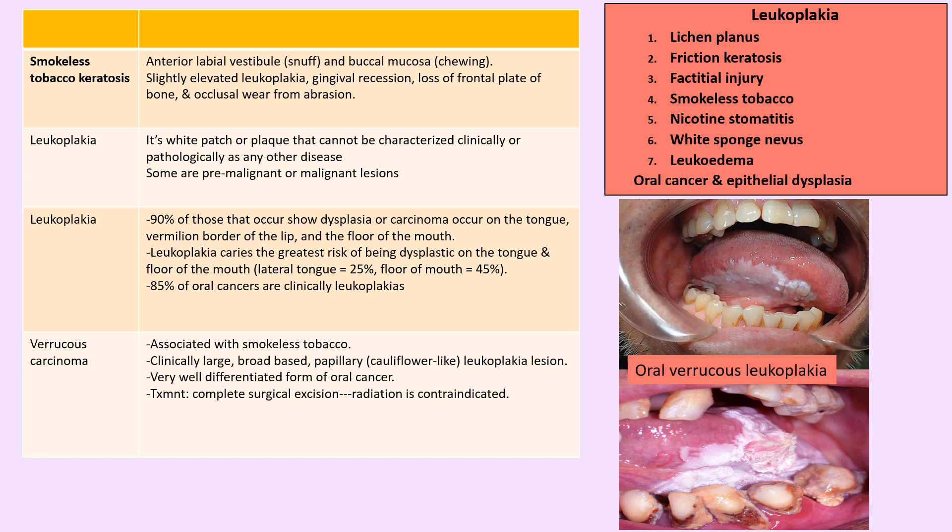The most common site of leukoplakia is on the tongue, floor of the mouth, and vermilion border of the lip — also the most common sites for oral cancer. Nicotine stomatitis and verrucous leukoplakia show a cauliflower-like growth. Many conditions appear as white patches: lichen planus, smokeless tobacco keratosis, nicotine stomatitis, leukoedema, white sponge nevus, and candidiasis. Key distinction: leukoplakia never rubs off; candidal white patches always rub off.